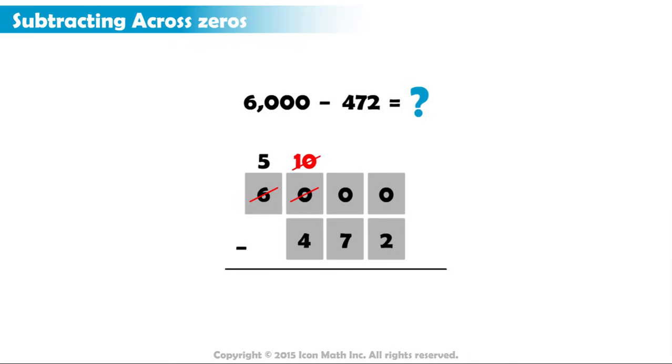We cross off the 10 and write 9 above it. Then, we cross off the 0 in the tens place and write 10 above it.